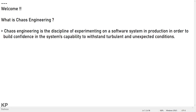Chaos engineering is mainly a strategy for discovering vulnerabilities in distributed systems. It is all about testing a system's integrity by proactively simulating and identifying failures. Proactively means before something happens, whereas reactively — like disaster recovery — means taking steps after a disorder has already occurred.